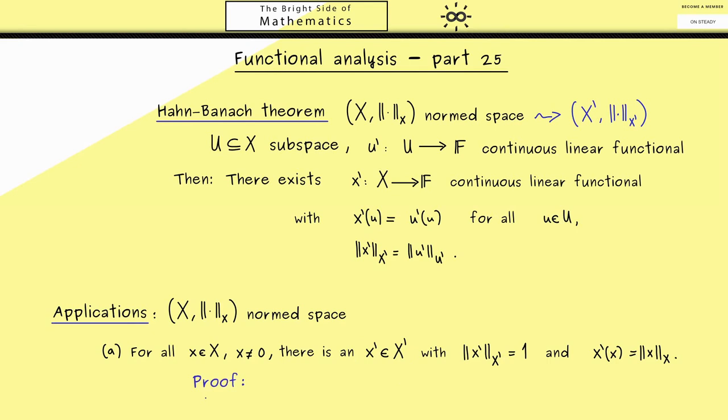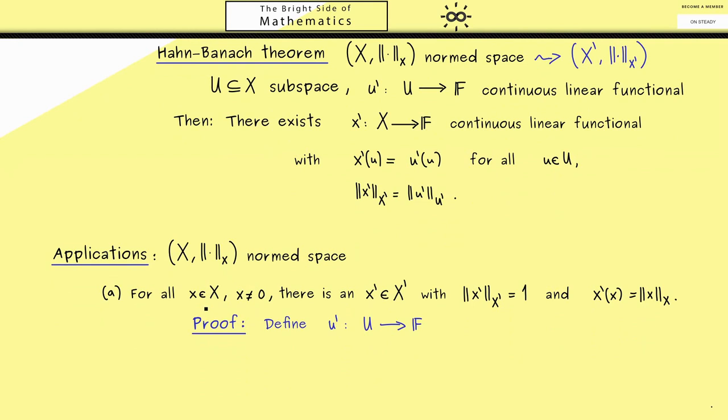So let's write down a proof where we apply the Hahn-Banach theorem from above. First of all we have to define our u prime and then the correct question would be what is our capital U. In this case this shouldn't be a problem because we only have one vector x as our information input. In other words if this is the vector space X and here we have the vector x then the only meaningful choice for U would be the one dimensional subspace that is spanned by x. In other words we can just scale the vector x with all numbers from F. Hence an arbitrary element always looks like lambda times x. And we send this to lambda times the norm of x.